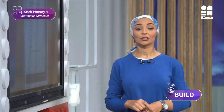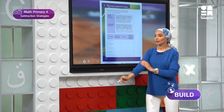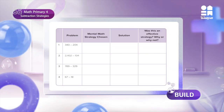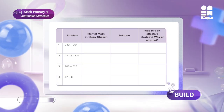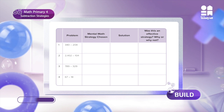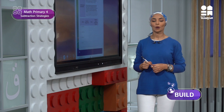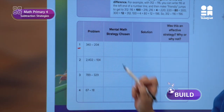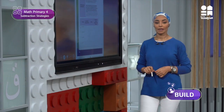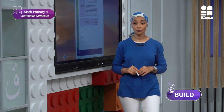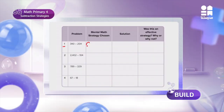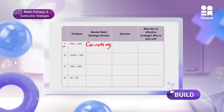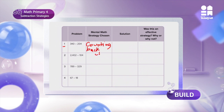Now it's your turn to apply the two strategies you have learned and check your understanding. Please go to page 74. I will give you time to answer problem 1 using the strategy you prefer. Now we will solve problem number 1 together. Here is problem number 1: 340 minus 204. I will use the counting back strategy.